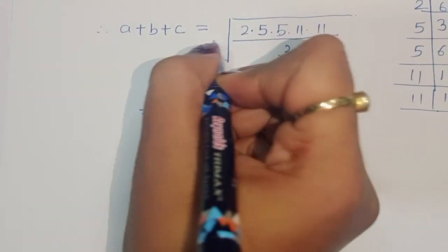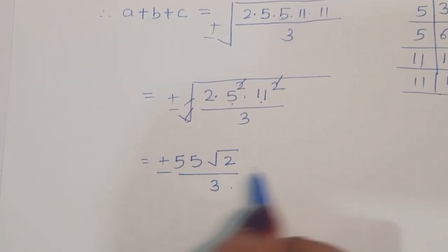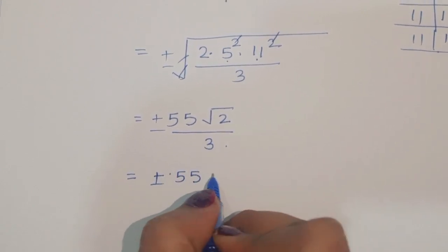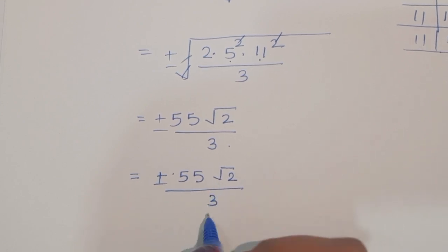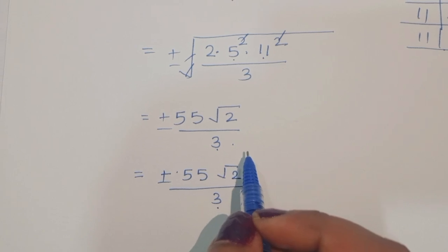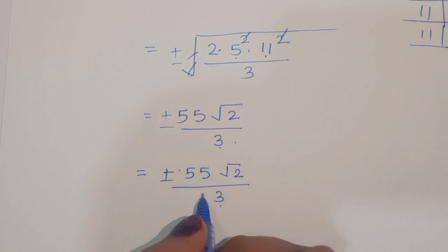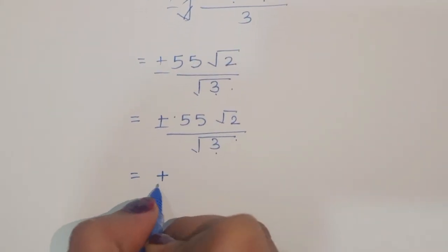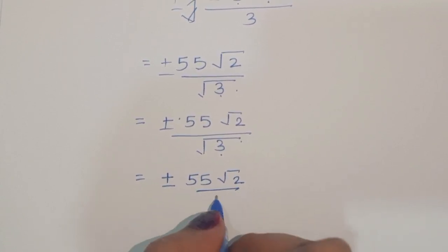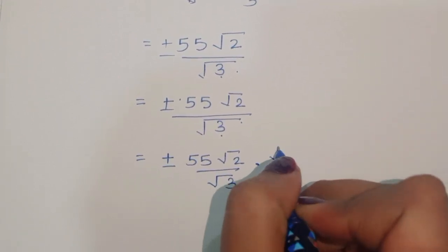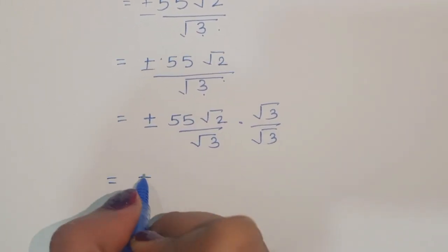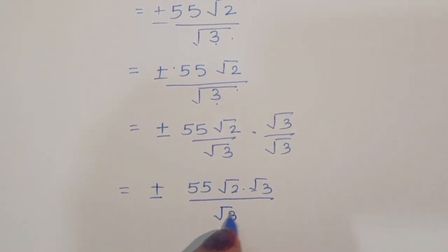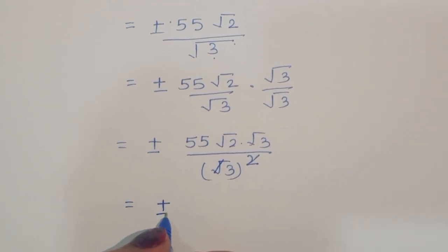Since this is a square root, we get plus or minus. To rationalize, we multiply and divide by square root of 3, giving plus or minus 55 times square root of 2 times square root of 3 divided by square root of 3 whole squared, which simplifies since square root of 3 squared equals 3.